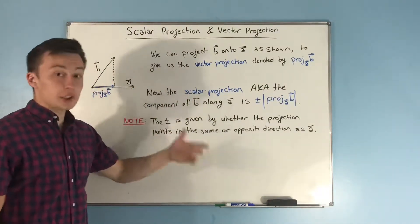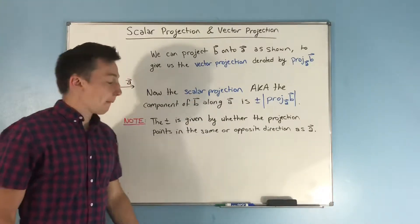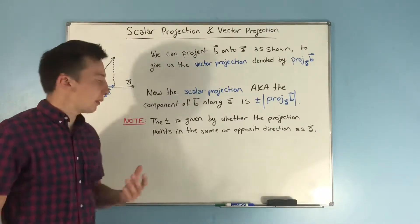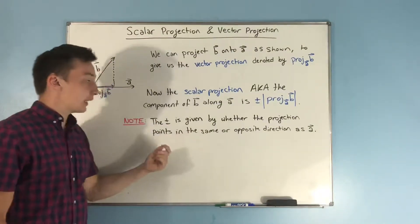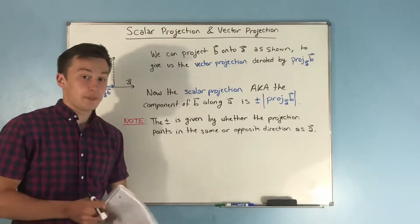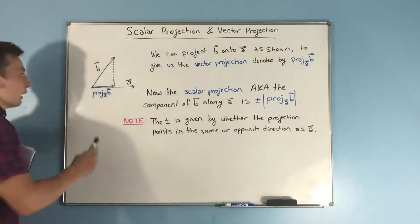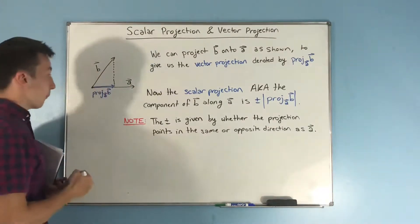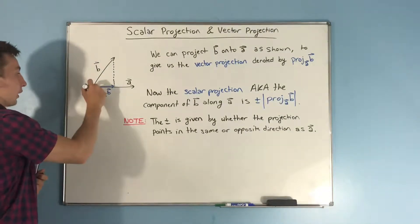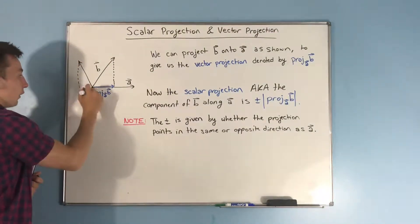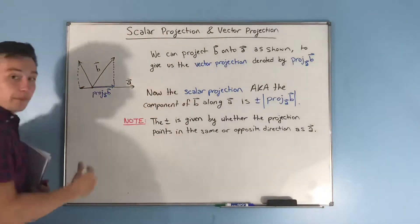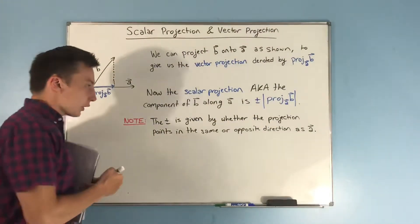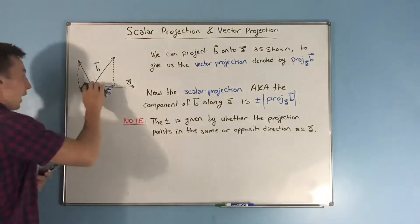All you do for the scalar projection is take the magnitude of it, and then it's plus or minus. That plus or minus — whether it's plus or minus — is given by whether the projection points in the same or the opposite direction as A. So for instance, if your B didn't go this way, let's say that it went this way. You end up with something down here where your projection points in the opposite way. Then you're going to have a negative. That's the idea, because it's pointing in the opposite direction as A.